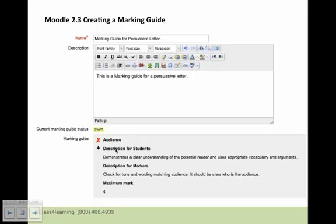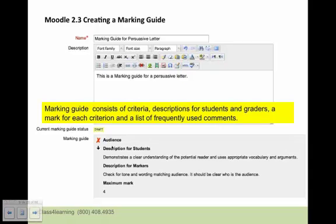So you can then maybe have criteria to look for. For example, we're using the example of a persuasive letter. When I set up the marking guide, it consists of criteria, descriptions for students and graders, a mark for each criteria, and a list of frequently used comments. Awesome. This is a nice feature. I wish they had it in the rubric.